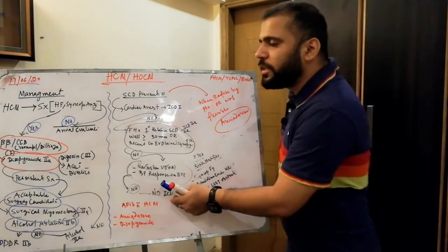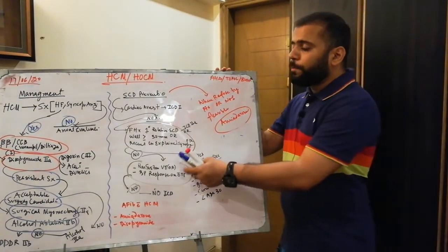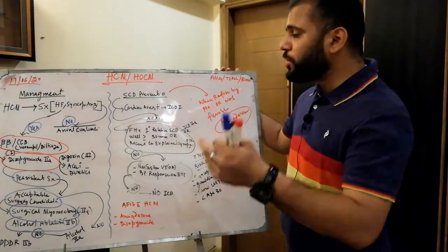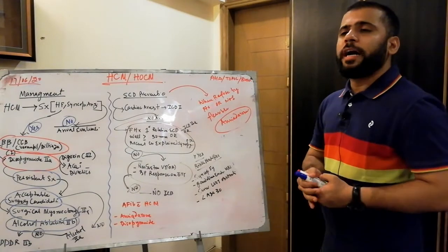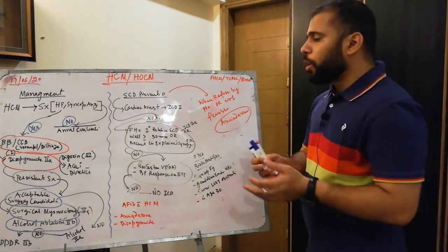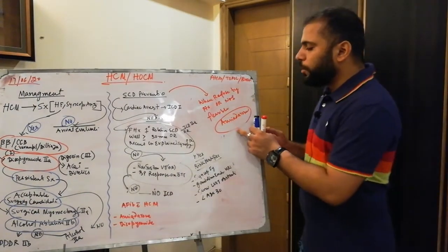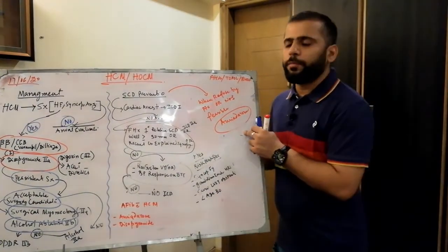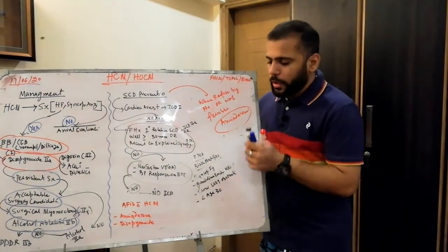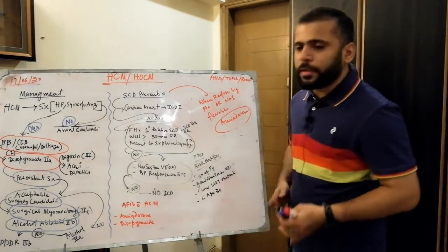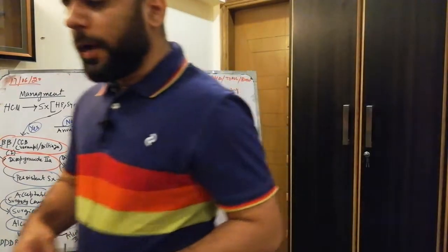If ICD is indicated but not feasible or refused by the patient, the only alternative is to keep the patient on amiodarone. If the patient has atrial fibrillation with hypertrophic cardiomyopathy, the only two drugs are amiodarone and disopyramide.